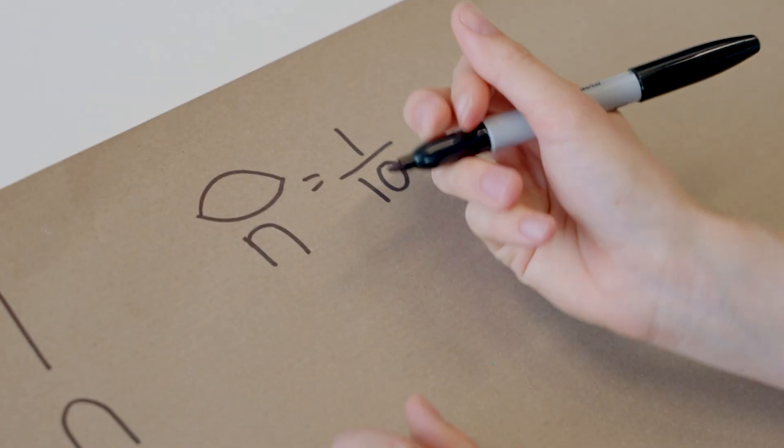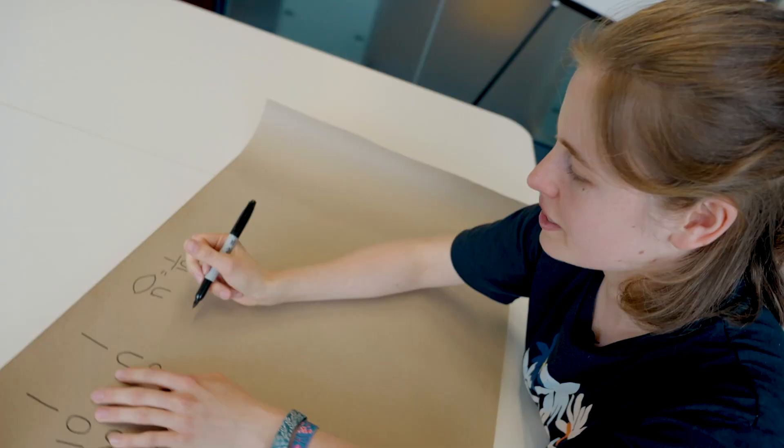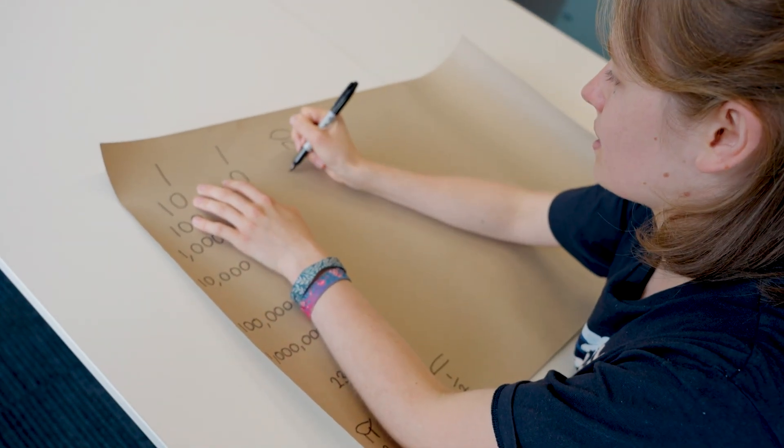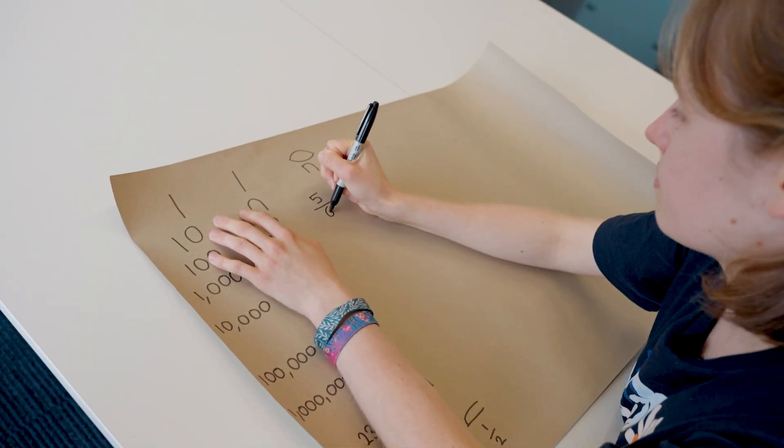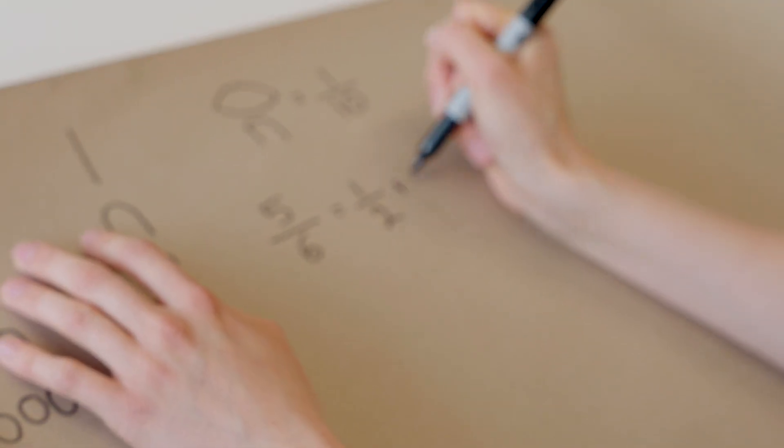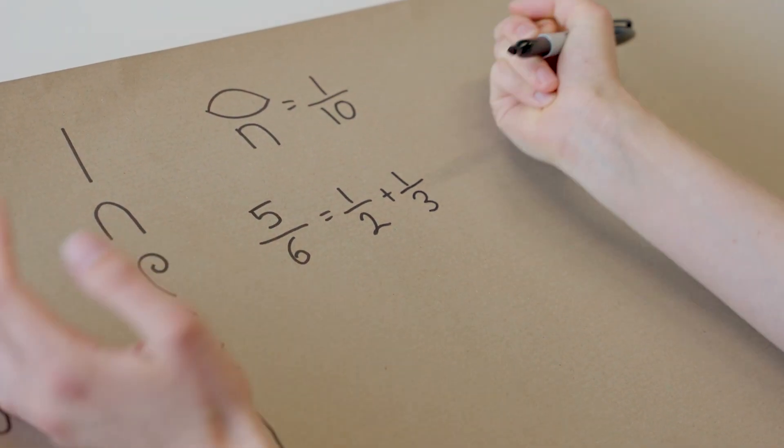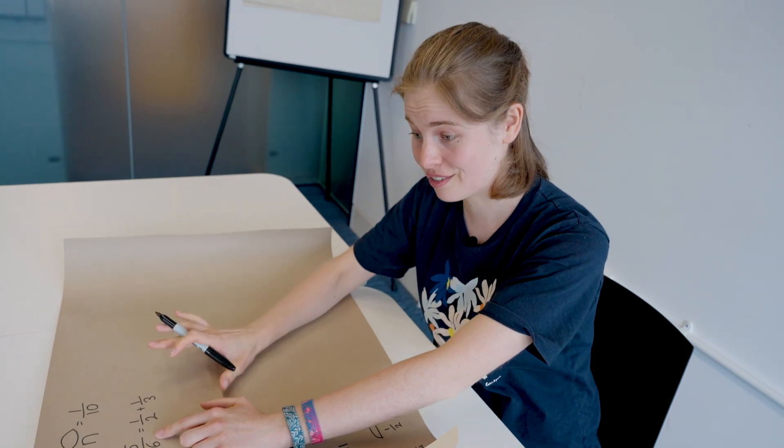So it begs the question, how is this useful? What happens if we have another fraction? What happens if we have, say, five sixths? Well, five sixths is going to be just a half plus a third. So actually, we can still do this. Now, with Egyptian fractions, which is what these are called, all the denominators have to be different.